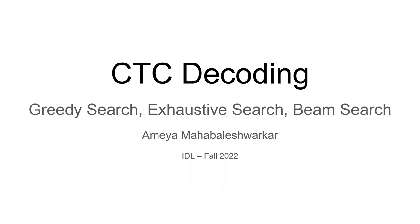Hello everyone, I'm Ameya and I'll be talking about CTC decoding — how CTC operates during inference time. We saw how CTC operates during training and how it solves the problem of alignment by considering all possible alignments. However, during inference, we cannot consider all possible alignments as we want to output one sequence. To do this, there are three main strategies: greedy search, exhaustive search, and beam search.